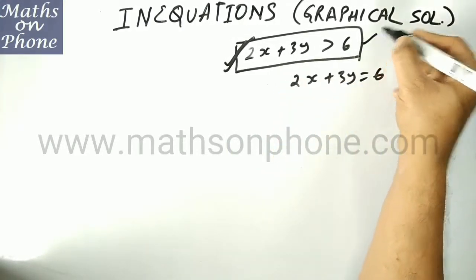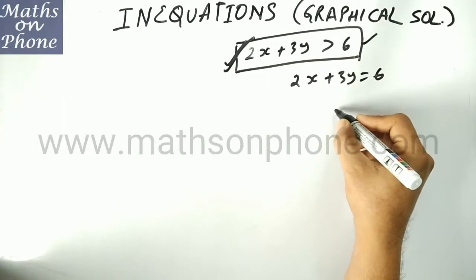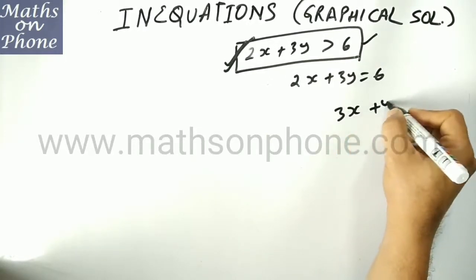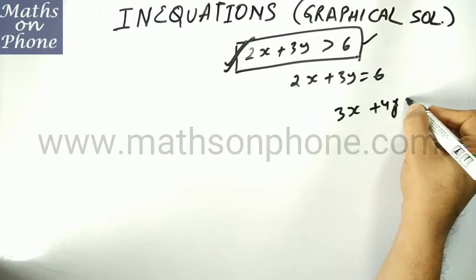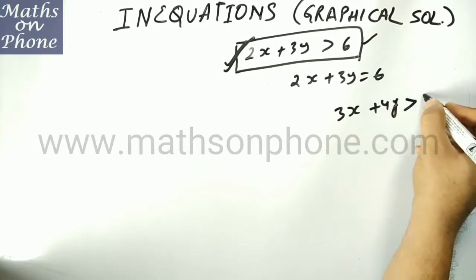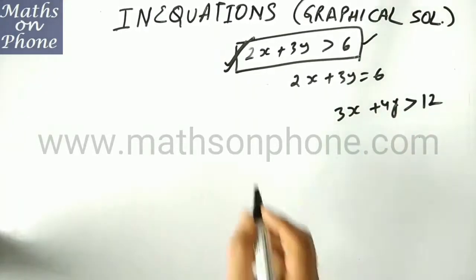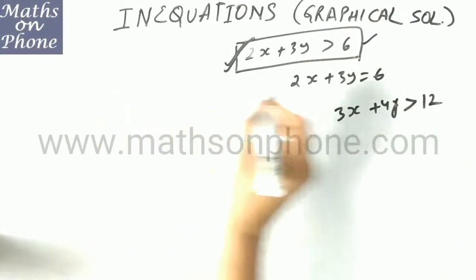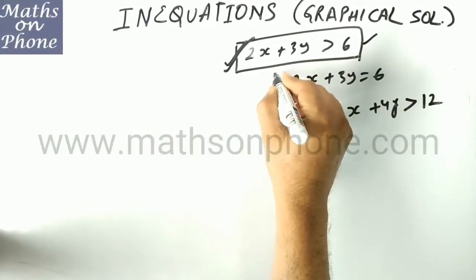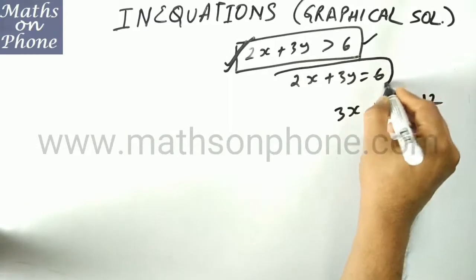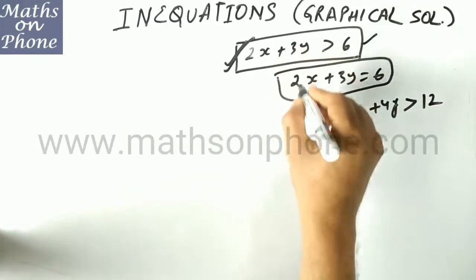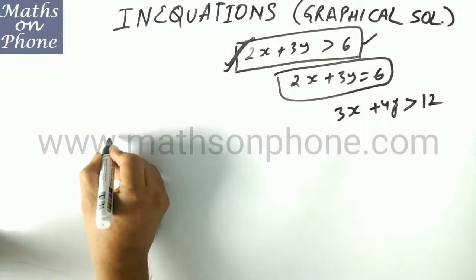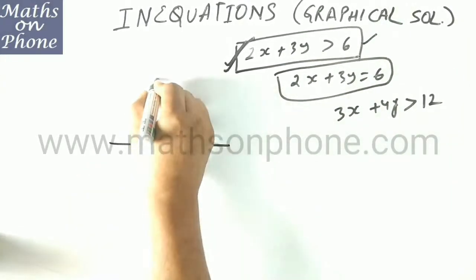Suppose I am taking one equation, and another equation I am writing. Suppose this is 3x plus 4y is greater than 12. So how to draw the graph? The corresponding equation of this linear inequation is this, so we need to draw the graph of that.